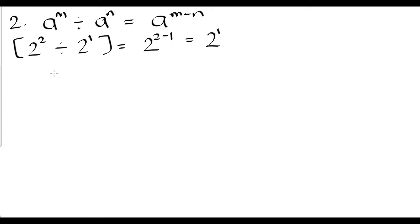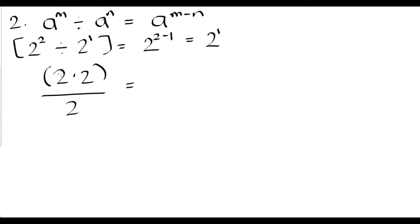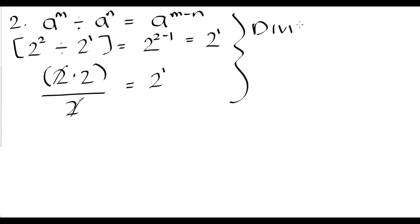Let's verify this intuitively. 2 to the second power divided by 2 to the first power — we have a 2 on top and a 2 on the bottom. When we have common terms in the numerator and denominator of a fraction, we can cancel them out. That leaves us with just 2, which is the same thing as 2 to the power of 1.